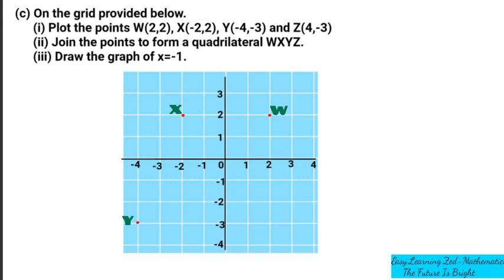We go to point Z, which has got the coordinates 4, negative 3, which is supposed to be here, and we name it Z. So now we have plotted the points. Let's go to question 2, which is asking us to join the points to form a quadrilateral W, X, Y, Z.